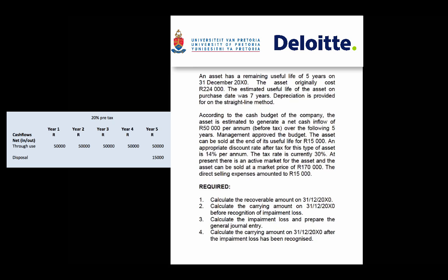The purpose of this example is to provide a very basic example of an impairment loss and the related calculations. Applying a suggested exam technique, we first consider the required section. They require the recoverable amount to be calculated at 31 December 20x0, the carrying amount before the impairment loss, and then the impairment loss itself along with the general journal entry.